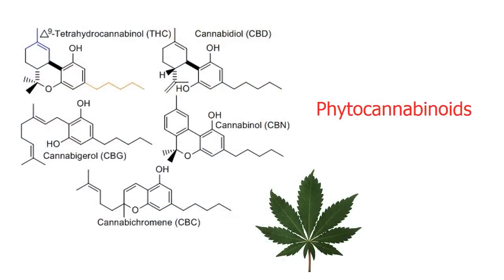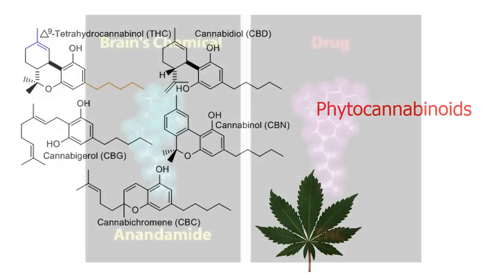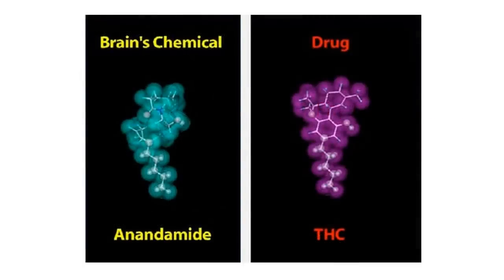We've talked so far about endocannabinoids, the ones our bodies produce. One of the other classes are the phytocannabinoids, the cannabinoids found in plants, or more specifically in cannabis. THC and CBD are phytocannabinoids, and combined they represent the two most abundant substances. These substances, when ingested, interact with our cannabinoid receptors more strongly, regardless of whether they are smoked, eaten, or vaporized.